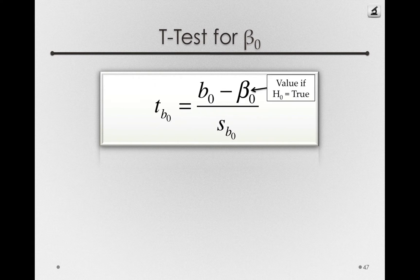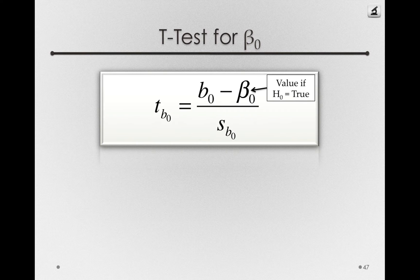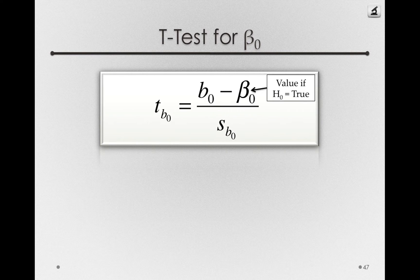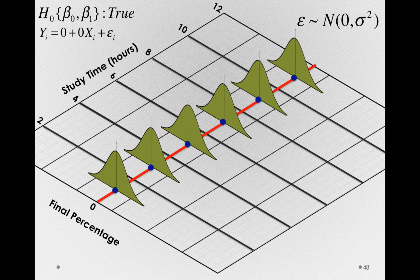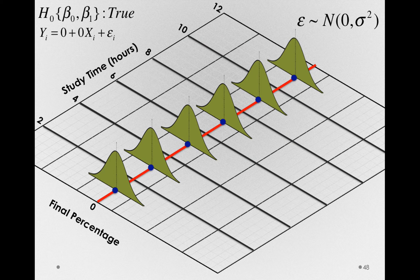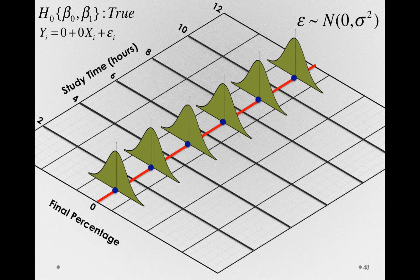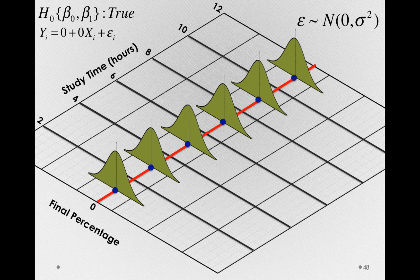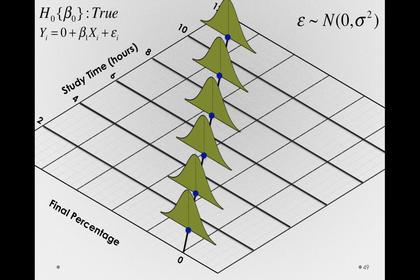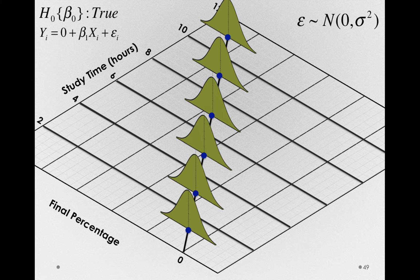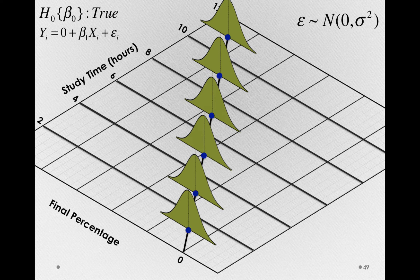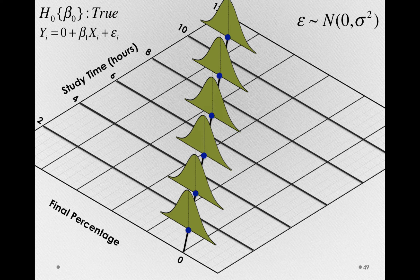So let's start with beta 0. Beta 0 here, if the null hypothesis is true, should be equal to 0. So in our graphic, that's a situation where when you have 0 study hours, you actually have 0 on the final percentage. It doesn't matter whether there's a slope in the population, so I could equally draw this where we actually have some true slope, but still when we have 0 of studying, the final percentage is actually 0.